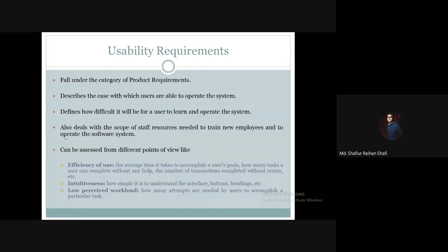Usability requirements also deal with the scope of staff resources needed to train new employees and to operate the software system. This includes considerations around how to train new employees to operate the system and the experience related to operating the software system.